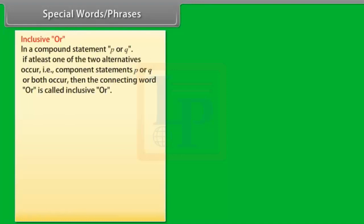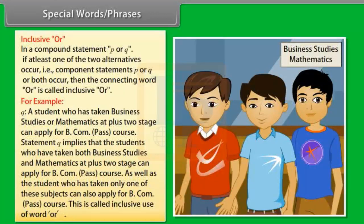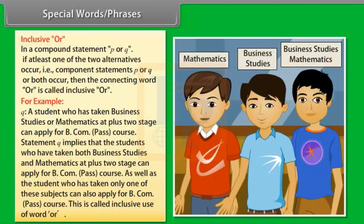Inclusive OR. In a compound statement P or Q, if at least one of the two alternatives occurs — that is, component statements P or Q or both — then the connecting word OR is called inclusive OR. For example, Q is the statement 'A student who has taken business studies or mathematics at plus-two stage can apply for BCom pass course.' This implies students who have taken both, or only one, can apply. This is called inclusive use of OR.